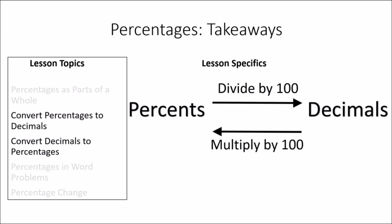We also learned how to convert between percents and decimals. To go from percents to decimals, we divide by 100, or think of it as moving the decimal point to the left two places. To go from decimals to percents, we multiply by 100, or think of it as moving the decimal point to the right two places.